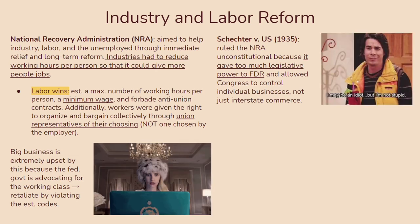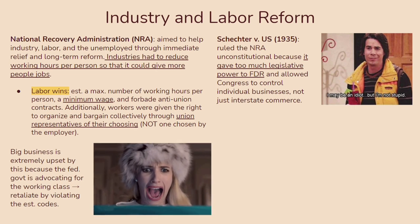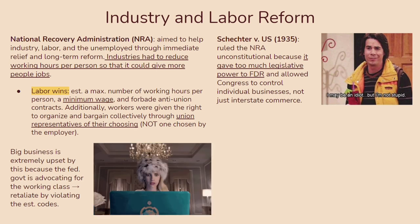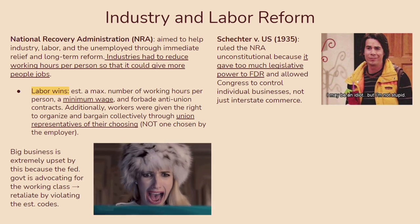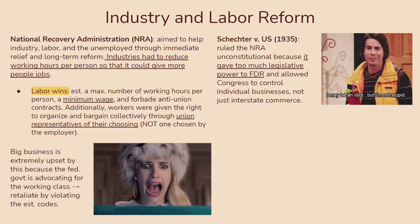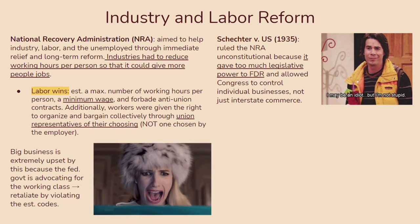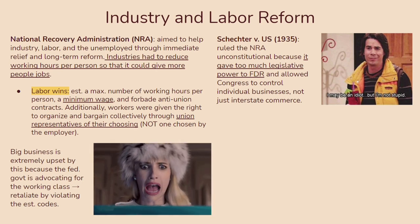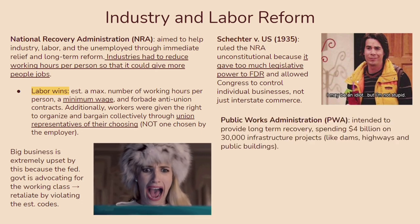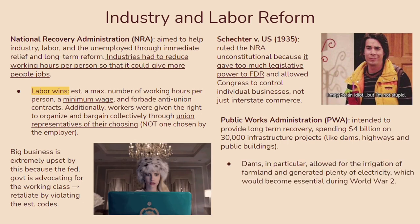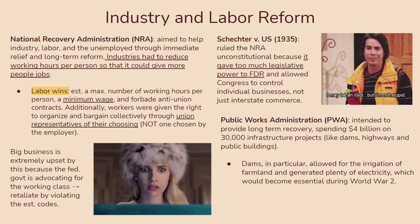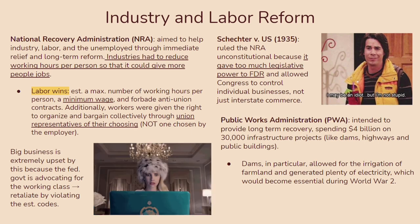Big business and even some of the public wanted to limit FDR's power, but the Schechter case still shows how, despite the economic crisis, the idea of checks and balances was being upheld. You should also know about the Public Works Administration — the PWA — which intended to provide long-term recovery by spending $4 billion on 30,000 infrastructure projects like dams, highways, and public buildings. This would be very useful later, specifically with dams, because it allowed for irrigation of farmland and generated electricity that became essential during World War II. Lastly, FDR repealed the prohibition amendment to help the alcohol industry, as the government needed a way to raise revenue and provide more employment opportunities.